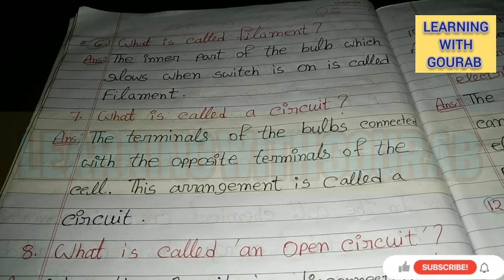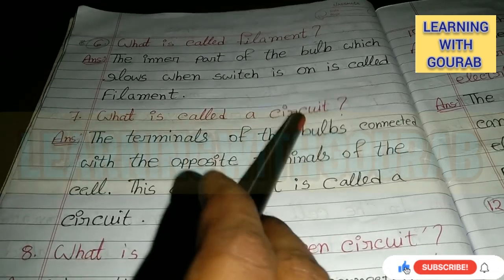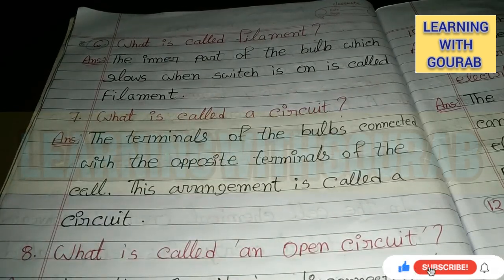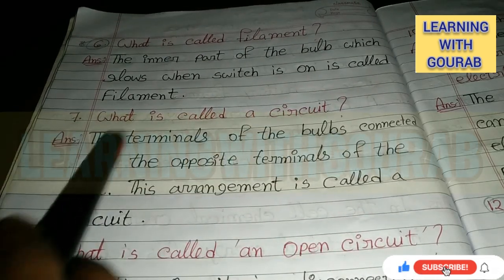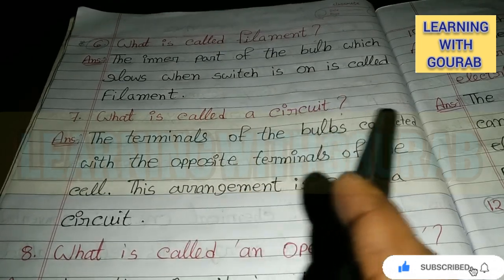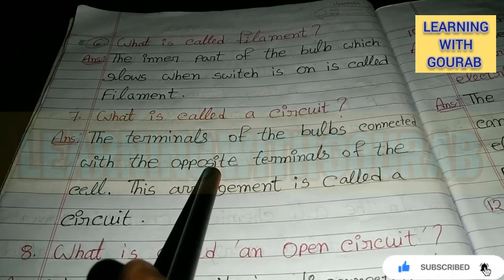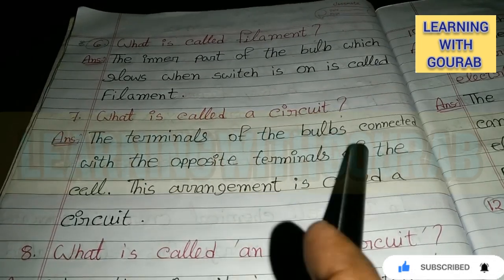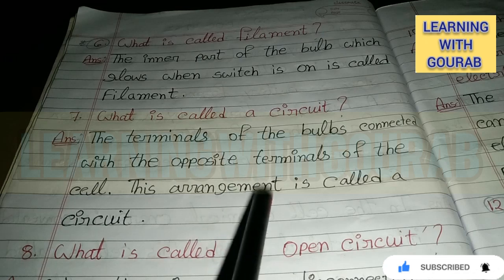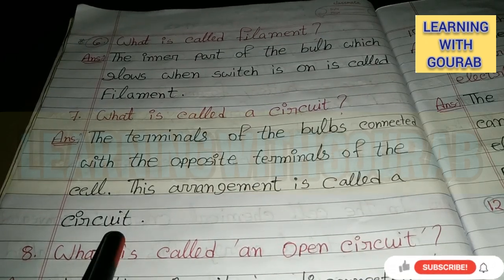Next: What is called a circuit? Answer: The terminal of the bulb connected with the opposite terminal of the cell — this arrangement is called a circuit.